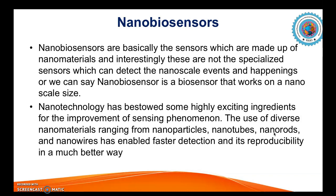For example, we can use a specific part of an enzyme as a sensor, or a particular part of an organism — say, tagging the mitochondria of a bacterium like E. coli to a nanomaterial like nano zinc or nano gold, and then the entire system works. In the nanosensor, this helps the biosensor become more miniaturized and work at a lower level. Nanotechnology has enabled highly exciting improvements in sensing, with diverse nanomaterials ranging from nanoparticles, nanotubes, nanorods, and nanowires enabling faster detection and better reproducibility.